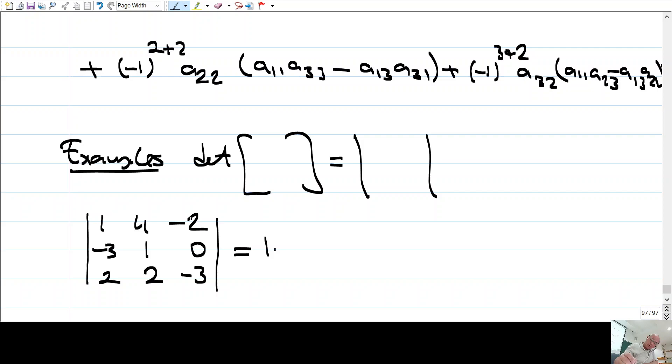So, 1 times, I cross this one and this one, determinant of this, so minus 3, minus 0, so minus 3. And then, okay, look at this entry, so minus 4 times, cross this one and this one, so 9, minus 0. And then, this entry, plus here, minus here, plus here, plus here, but I have minus 2, times, cross this one and this one, so minus 6, minus 2.